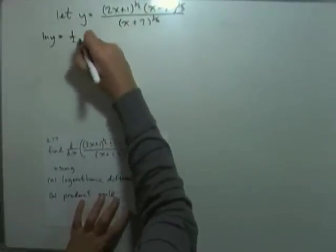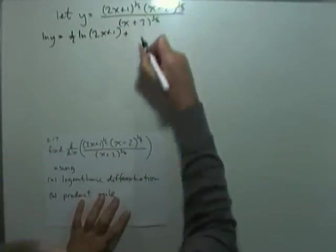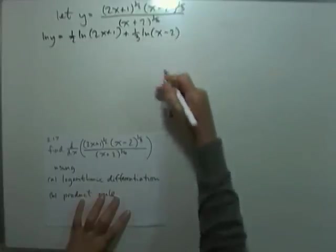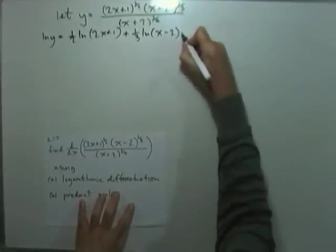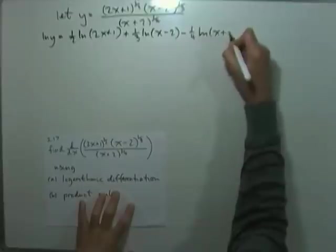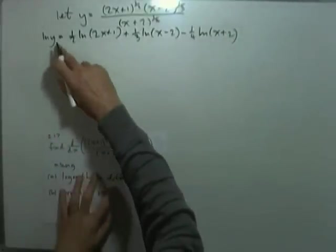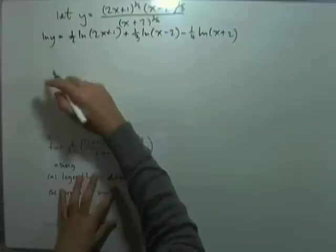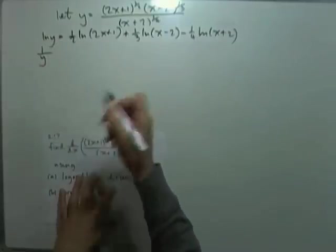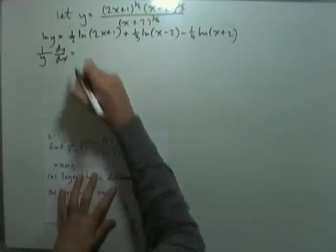So ln(y) equals a half times ln(2x + 1), plus — product, add the logarithms — one third times ln(x − 2), minus — quotient, subtract the logarithms — a quarter times ln(x + 2). Then differentiating both sides: the derivative of ln is one over whatever it's acting on, so (1/y) times dy/dx equals the derivatives of the right-hand side terms.